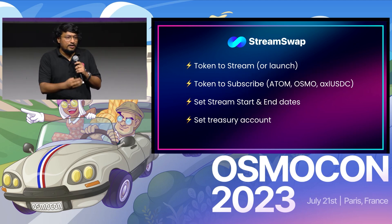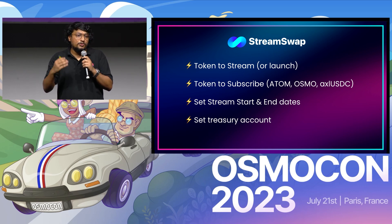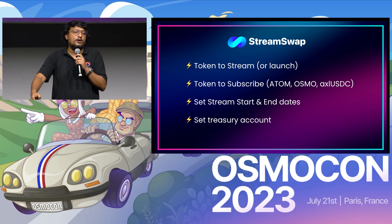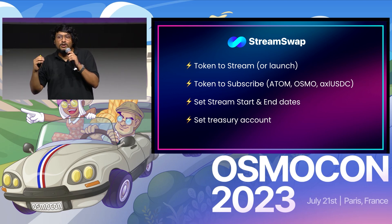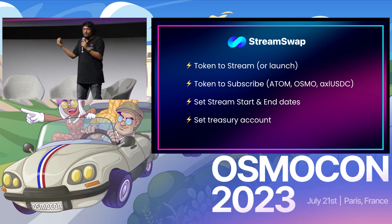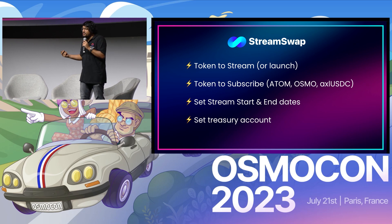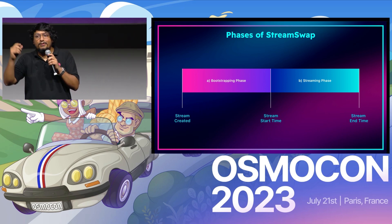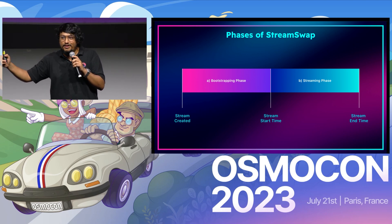If you are a project, a DAO, a community pool, or a foundation, you can utilize StreamSwap to diversify your community pool. You can select a token to stream, select a subscription token — the token with which your own token is swapped — then set a stream start date, an end date, and a treasury account to which the proceeds of the launch go. There are two phases for StreamSwap: a bootstrapping phase where subscribers can deposit or lock their tokens, and then a streaming phase where the tokens are swapped.